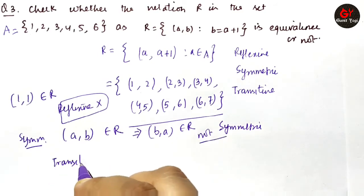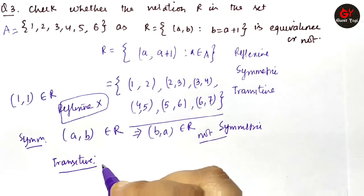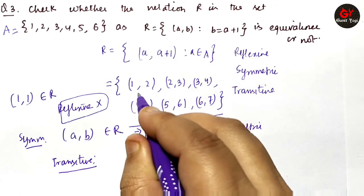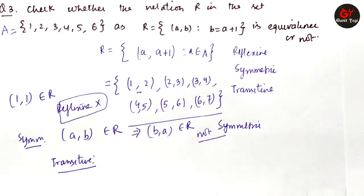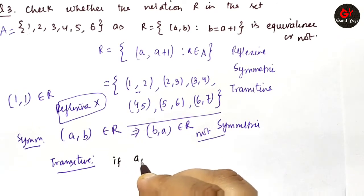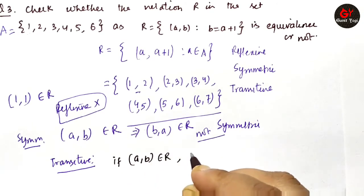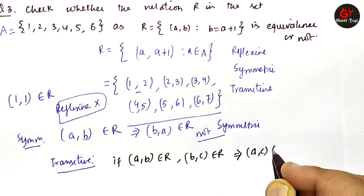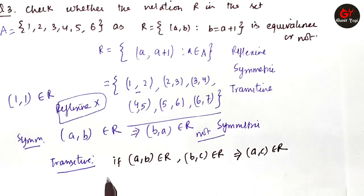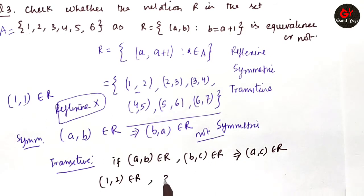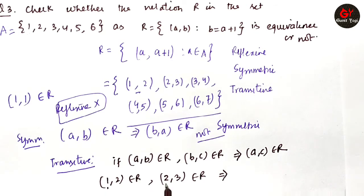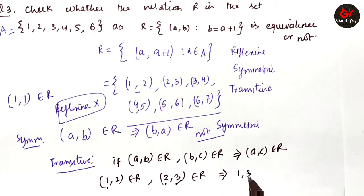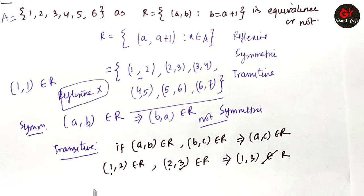In a similar way, we check transitive. For transitivity, we need: if (a, b) is in R and (b, c) is in R, then it must imply that (a, c) is also in R. Here, (1,2) is in R and (2,3) is in R, but does this imply (1,3) is in R? That is not true — (1,3) is not in R. Therefore, it is not transitive.